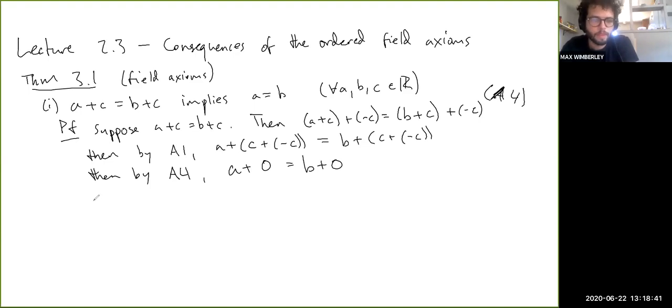And so then using the additive identity property, so then by A3 I believe, a equals b. So that's all we wanted to show. We're done.